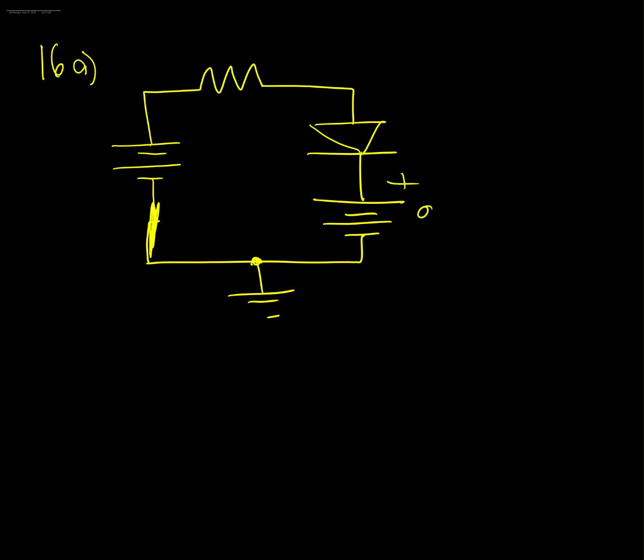This is a plus 8 volt supply. This is a plus 5 volt supply and we've got a 10 ohm resistor here and our diode.